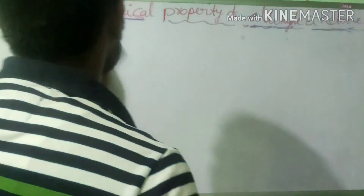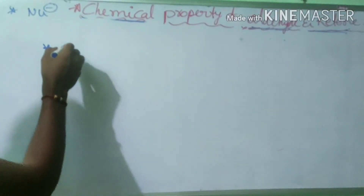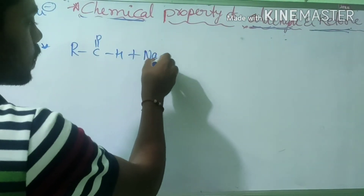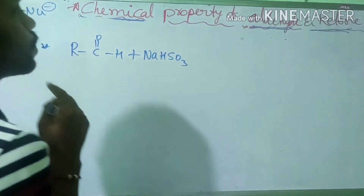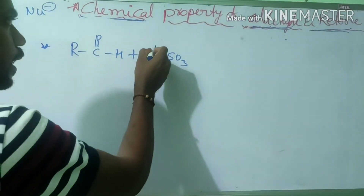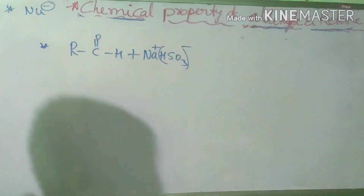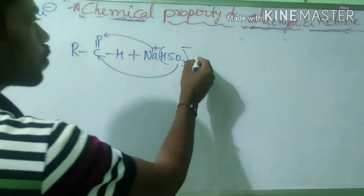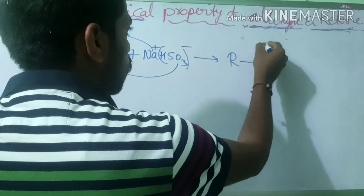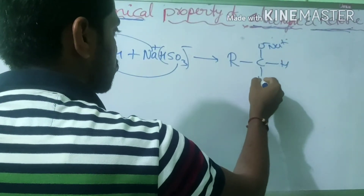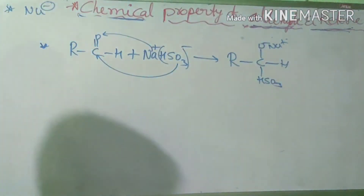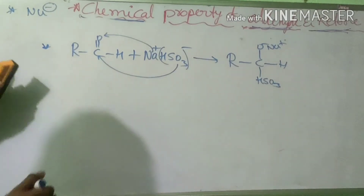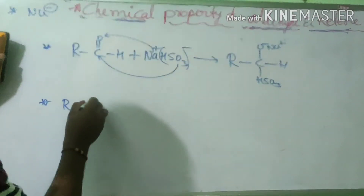Next, the reaction with sodium bisulfate - NaHSO3. This dissociates into Na plus and HSO3 minus. The Na plus attaches to the oxygen and HSO3 minus, acting as the nucleophile, attaches to the carbonyl carbon. The product formed is R-C(OH)(SO3Na) - sodium bisulfate addition product.